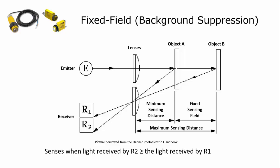This is a depiction of a fixed field background suppression sensor. You have the emitter over here emitting light. They are lensed. You have R1 and R2, so there's two receivers. Light comes off and reflects off of this object, which is called object A, which is actually the first position of the object. The light comes off, reflects, gets collected by the lens, and you can see here that it's striking R2.